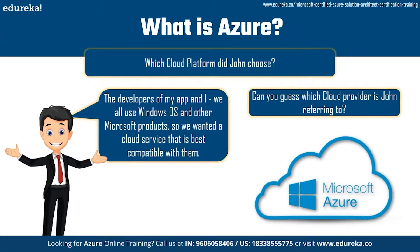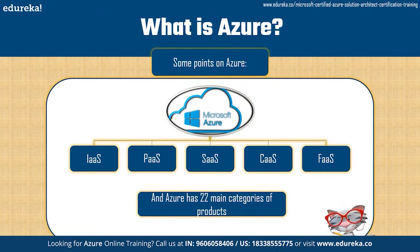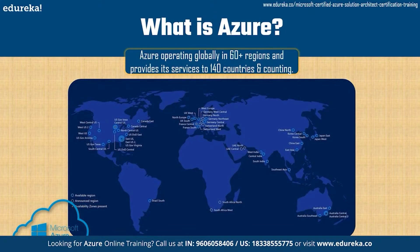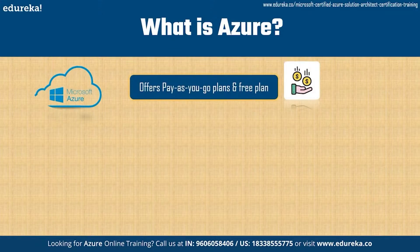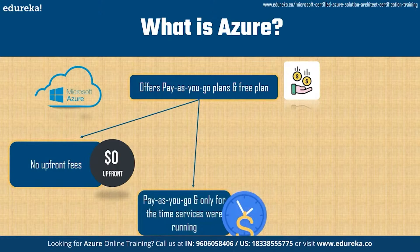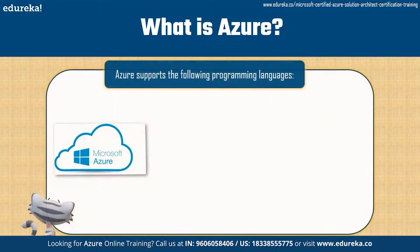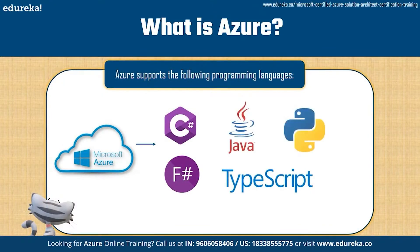Azure provides five distinct types of services: Infrastructure as a Service, Platform as a Service, Software as a Service, Container as a Service, and Functions as a Service. Azure has 22 main categories of products, which we'll take a look at shortly. It operates globally in 60-plus regions and provides services to 140 countries and counting. Azure offers pay-as-you-go plans with no upfront fees — you only pay for the time your services are running. There's also a free basic plan, valid for 12 months. Supported languages on Microsoft Azure include C#, F#, Java, TypeScript, and Python.